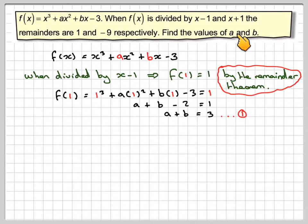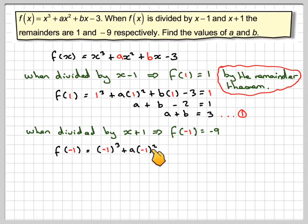Then we use the other bit of information, x plus 1. The remainder will be minus 9. That will imply that f of minus 1 will equal minus 9. So now substituting minus 1 in here instead of x, we're going to get f of minus 1 equals minus 1 cubed plus a times minus 1 squared plus b times minus 1 minus 3 equals minus 9.